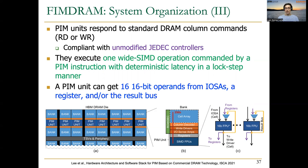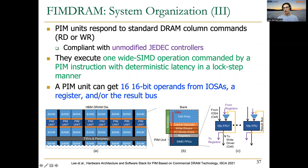A PIM unit can get 16 16-bit operands either from the I/O sense amplifiers, from a register that the PCUs or PIM units contain, or from their result bus. For each of the lanes in the SIMD unit, data can come from the cells or from the I/O sense amplifiers at the bottom of the bank, from registers inside the SIMD units or PCUs, or from the result bus, as we see in these result muxes.